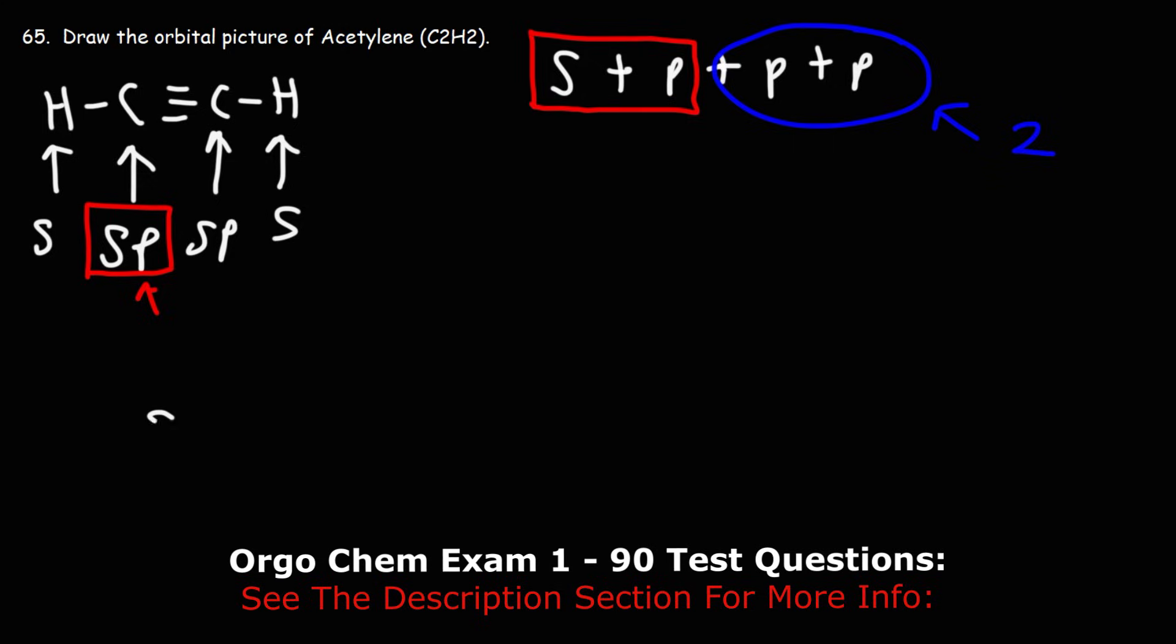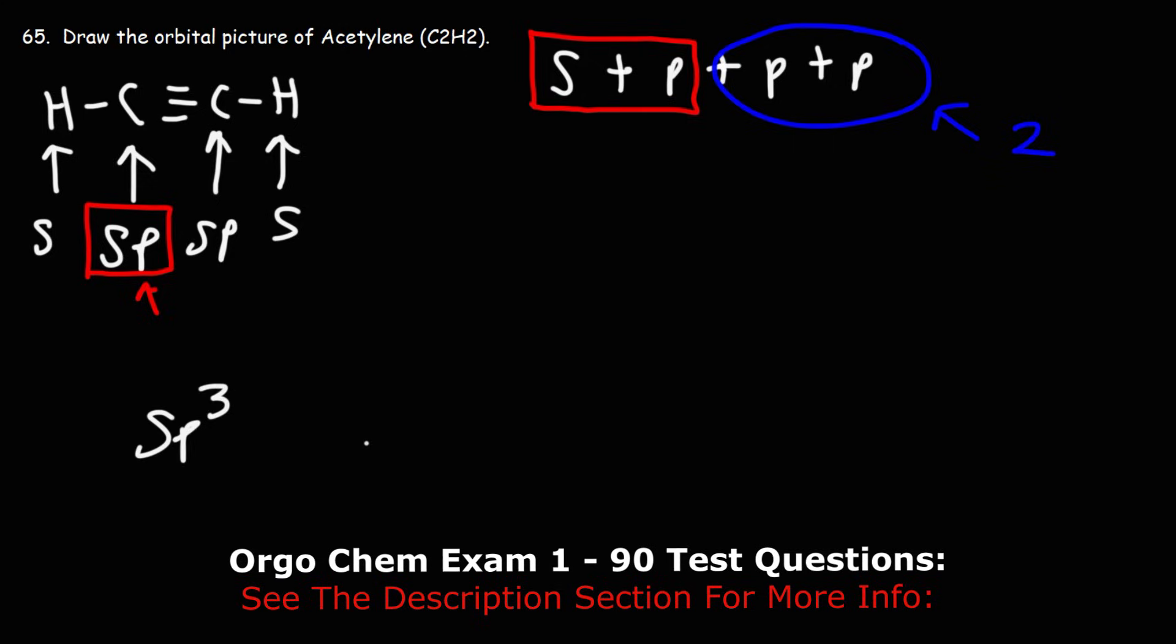Keep this in mind: if you have an sp3 hybrid carbon, that means there's zero p orbitals. If you have an sp2 hybrid carbon, you have one empty p orbital. If you have an sp hybrid carbon, you have two empty p orbitals.